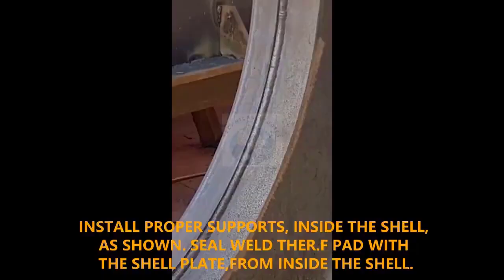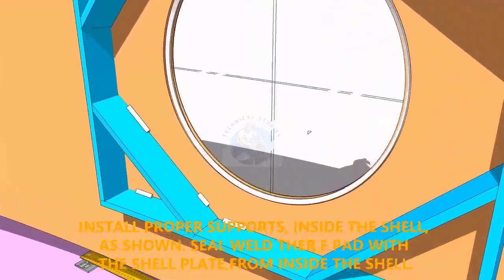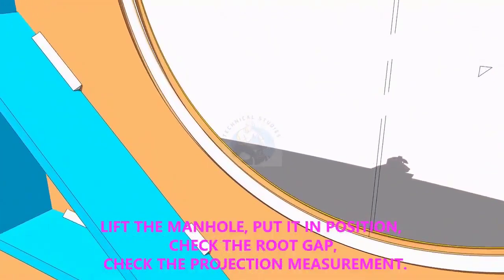Provide proper supports to control the distortion during welding. Weld a run on the joint between the shell plate and the pad plate.